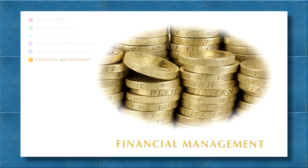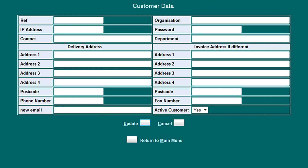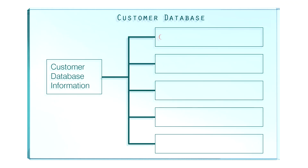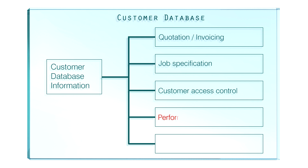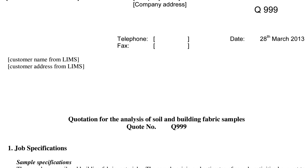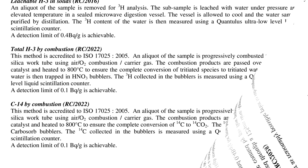Financial management. RADEC LIMS includes a number of functions to aid financial management. Customer details are stored within the customer database. RADEC LIMS is used in combination with other databases within LIMS to generate quotations and invoices, in job specification entry to control customer access, and for performing monitoring. In addition, LIMS can automatically generate customer notifications on receipt of samples. Quotes may be generated automatically using information from the customer database and analysis database, which incorporates method summaries, limits of detection and analytical costs.